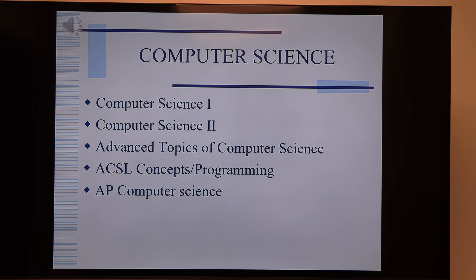We also have a computer science program. To start computer science, a student would need either Algebra 1 at the eighth grade level or to take Algebra 1 CP at the high school, because there is a lot of math in the computer science programs. A ninth grader can start with Computer Science 1 if they had Algebra 1 at the eighth grade level, and they can take computer science as an elective throughout their four years.